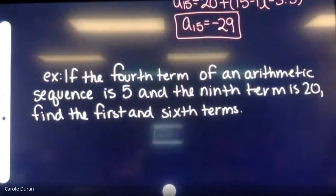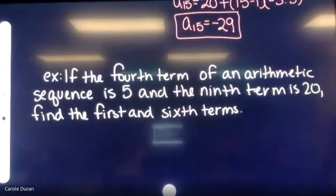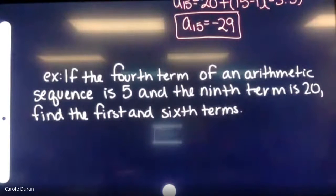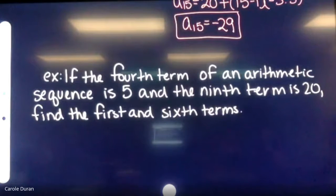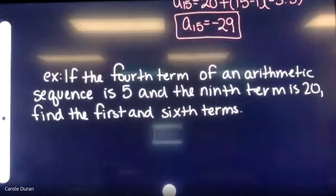If the fourth term of an arithmetic sequence is five and the ninth term is 20, find the first and sixth terms. I'm going to use the a(n) formula because I have two unknowns — this approach is guaranteed to give us the right answer with the fewest mishaps.